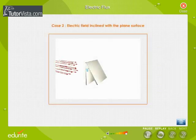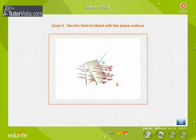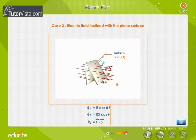Case 2: If the electric field is inclined at an angle θ with the plane surface of area S, then the expression for electric flux can be written as φ_E equal to E cos θ into S. φ_E equal to ES cos θ. φ_E equals vector E dot vector S.